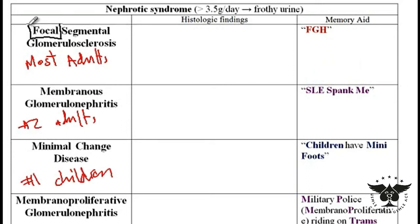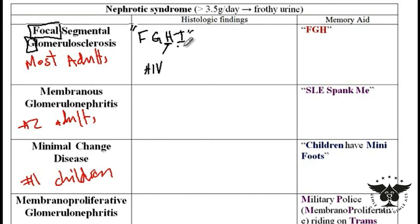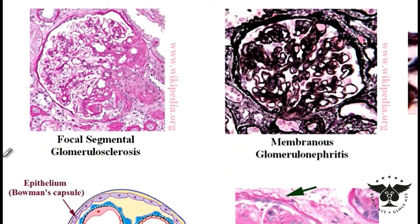For focal segmental glomerulosclerosis, as the name implies, it's a focal disorder — less than 50% of the glomeruli are affected. The memory aid is 'FGHI': FG stands for focal segmental glomerulosclerosis, H stands for HIV, and I stands for IV drug users. This disorder is commonly seen in HIV patients and IV drug users. The histology shows sclerosis and hyalinization of glomeruli affecting less than 50% — as seen in the provided image.